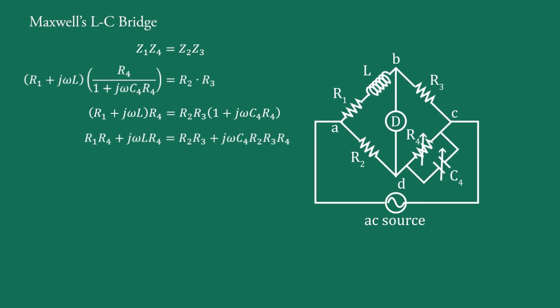Equating the real parts of this equation, we have R1·R4 equals R2·R3, or R1 upon R2 equals R3 upon R4. This is equation 1.